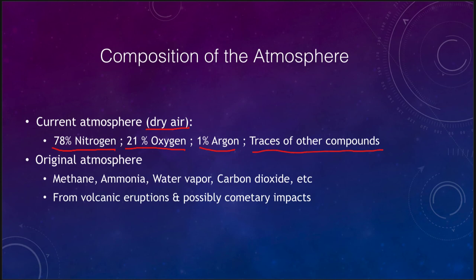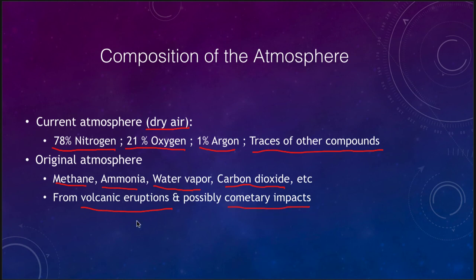This is not the original atmosphere that the Earth had. The original atmosphere would have had things like methane, ammonia, water vapor, and carbon dioxide. The atmosphere we have today is nothing like the atmosphere that was originally formed on Earth — it evolved from outgassing from volcanic eruptions that melted rocks and released gases trapped in them, and possibly from cometary impacts bringing icy materials to Earth. If we were to go back billions of years, the atmosphere on Earth would be unbreathable, with no oxygen, and a very different composition.